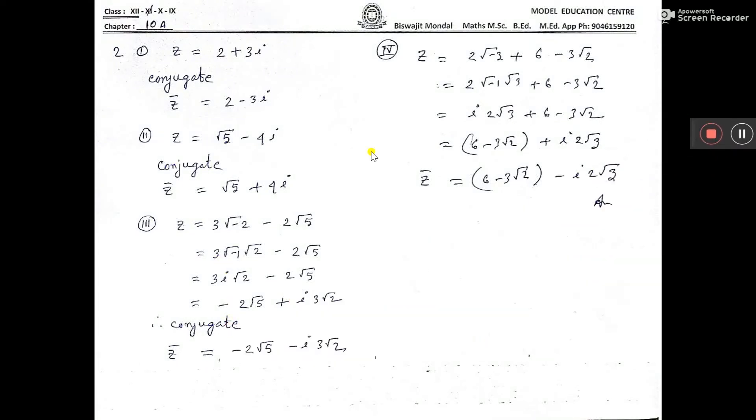We have to find the conjugate. Now, conjugate means if z equals this, z bar will be... before i you have to change the sign. So z is the number, conjugate will be here, minus 2 minus 3i.